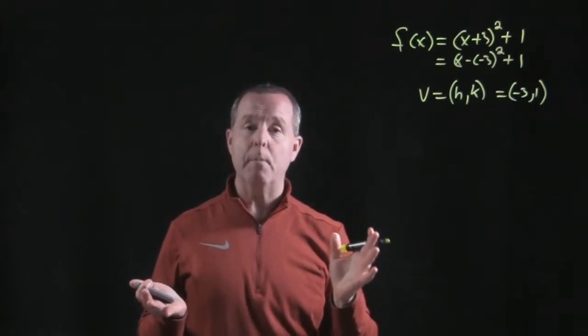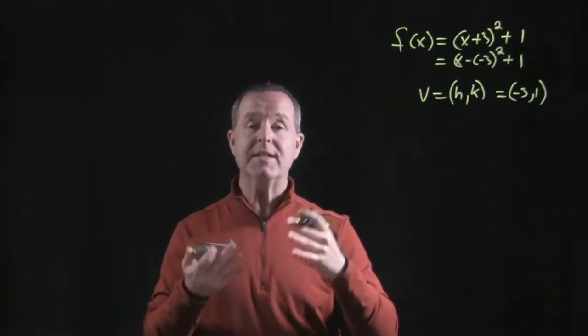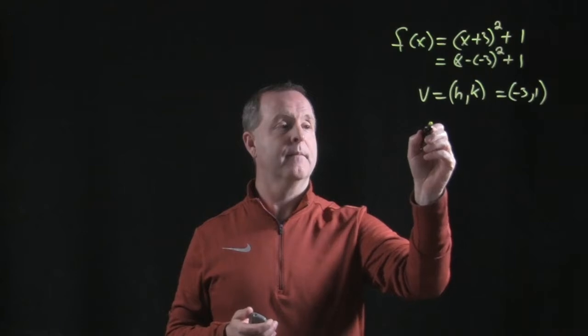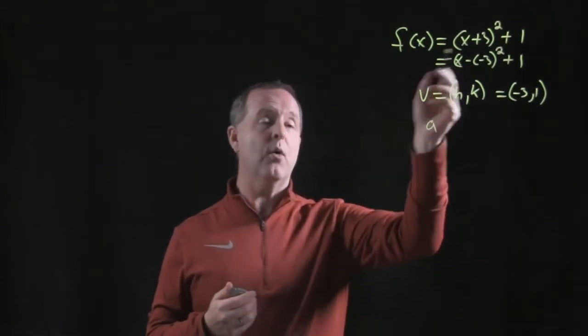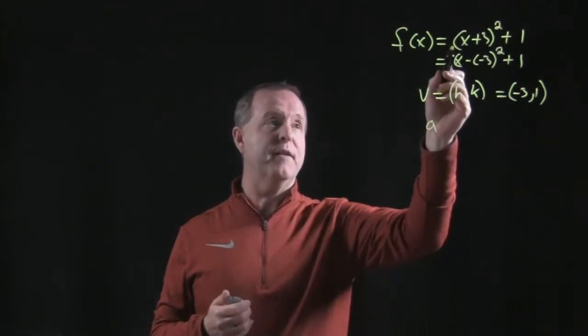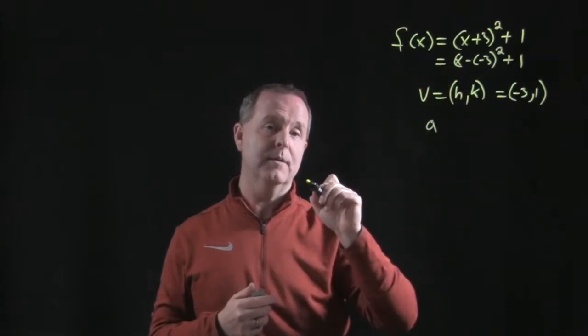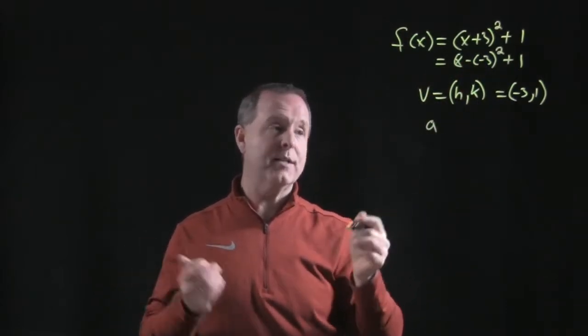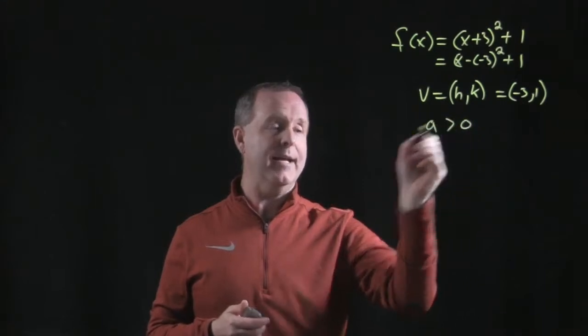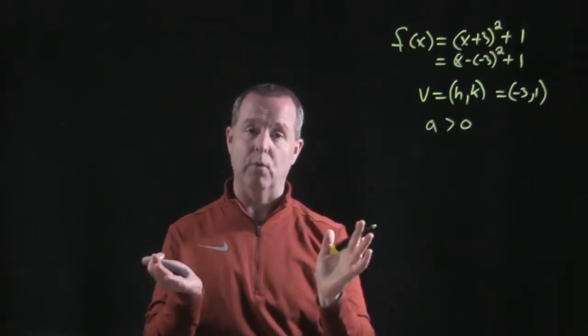What do you notice about, does it open upwards or downwards? What's the value of a? Well, there is no a here. a represents the coefficient in front of the squared term. It's not there, so it's a 1, and 1 is positive. So we know that a is positive, so our graph opens upwards.